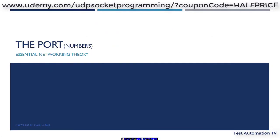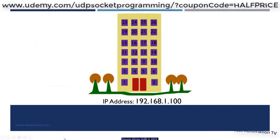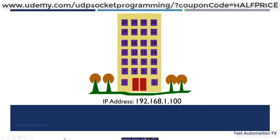In order to understand port numbers, we will use an analogy. Let us consider that your PC is like an apartment building. The entire building can be reached through a specific street address — in the case of a PC, that would be the IP address. This building is further divided into apartments, where every apartment is identified by a unique apartment number. This apartment number is similar to the port number.